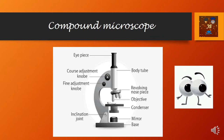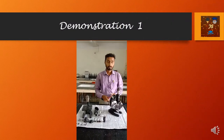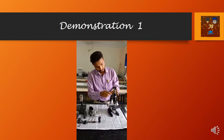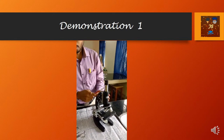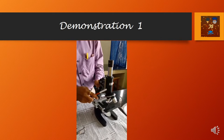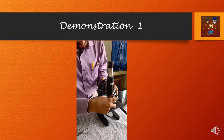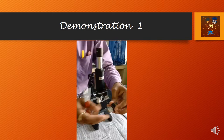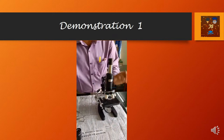Here you can see the different parts of a compound microscope, starting from the eyepiece up to the base. The eyepiece is 10x. This one is the draw tube, this one is called the body tube, and this one is called the nosepiece. The nosepiece is attached with the objectives. There are three objectives: one is 10x, one is 40x, and another is 40x.